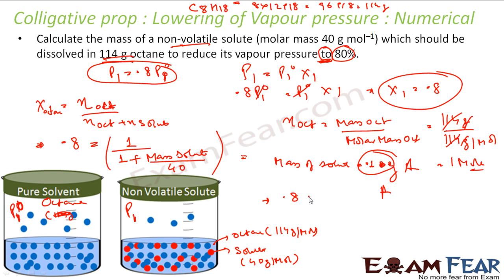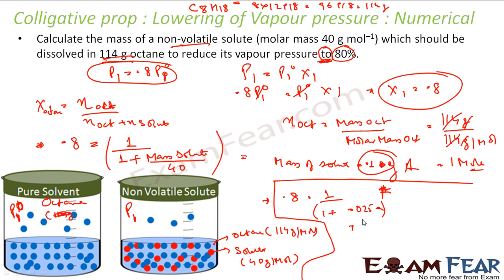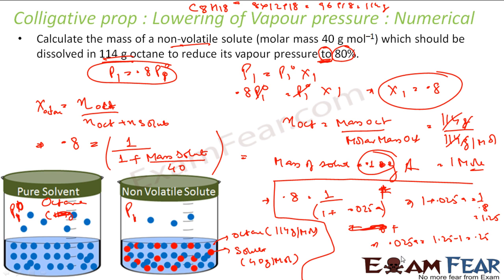Let me solve this to avoid confusion. 0.8 = 1 divided by (1 + a/40), where a is mass of solute and a/40 = 0.025a. This gives 1 + 0.025a = 1/0.8 = 1.25. So 0.025a = 0.25, therefore a = 0.25/0.025 = 10... giving mass of solute as 0.1 gram.